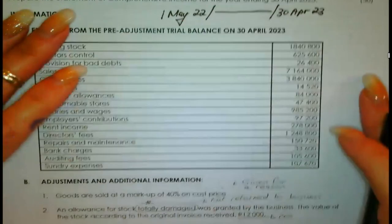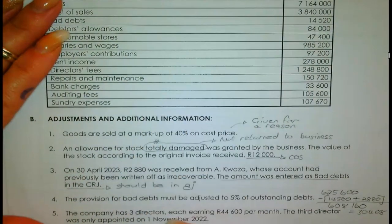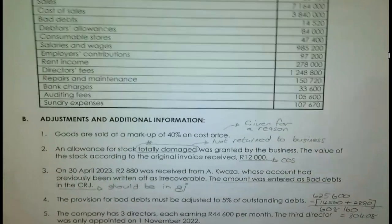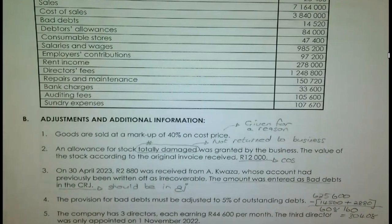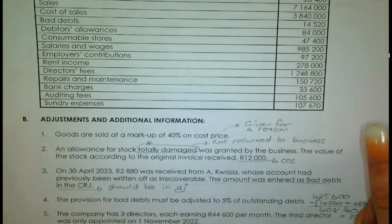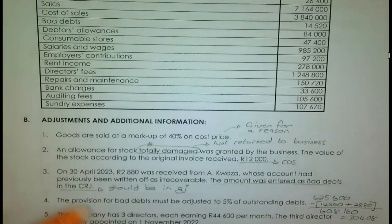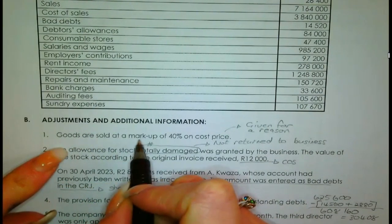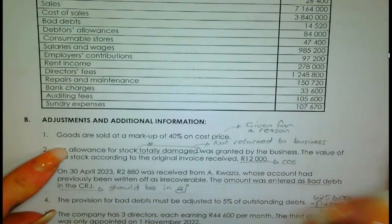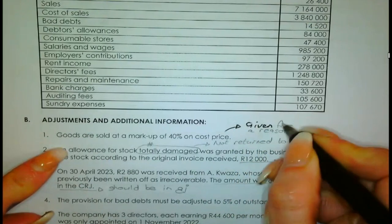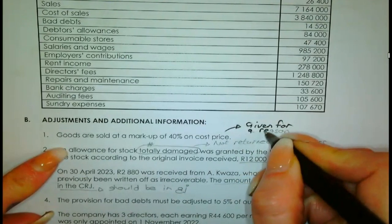They require us to prepare the statement of comprehensive income for the year ended 30 April 2023. There is an information section: section A is the extract from the pre-adjustment trial balance, with amounts from either the balance sheet or nominal section. Then there are adjustments. A tip: in your exam, during the 10-minute reading time, start reading through the adjustments — your mind is already working out the answers.